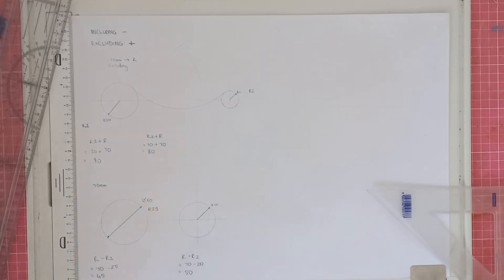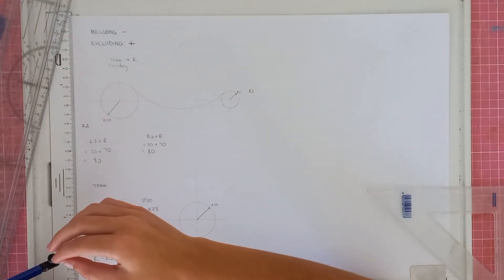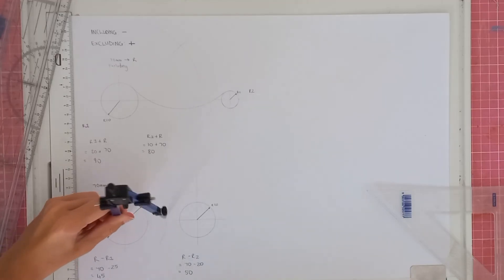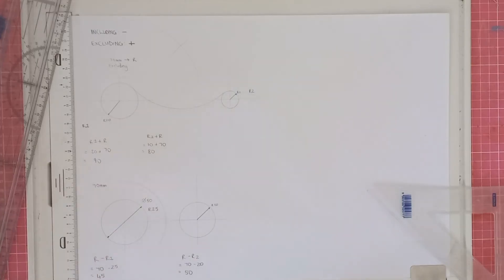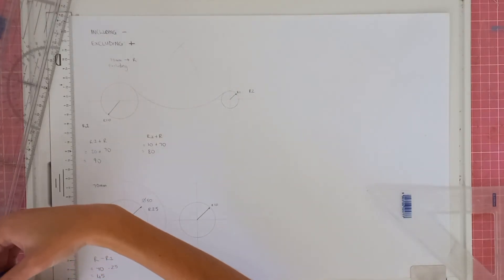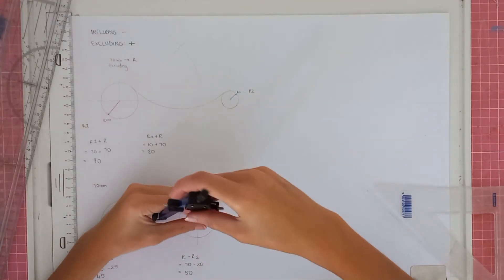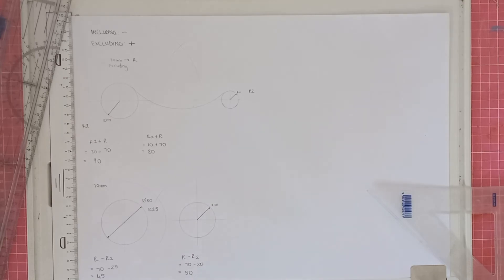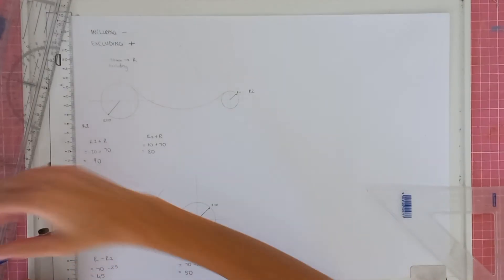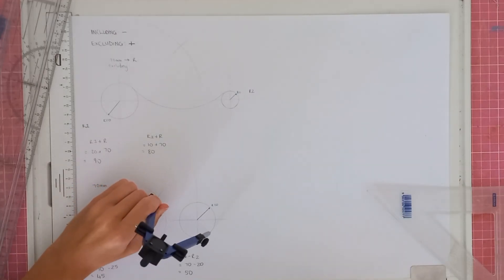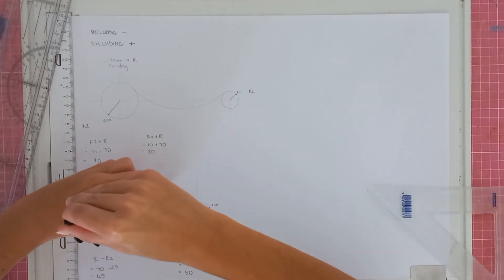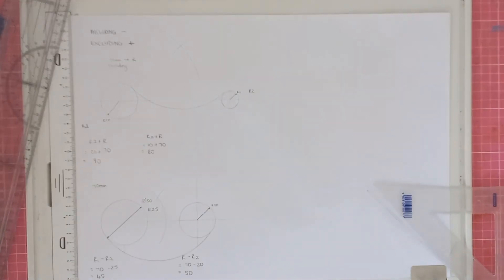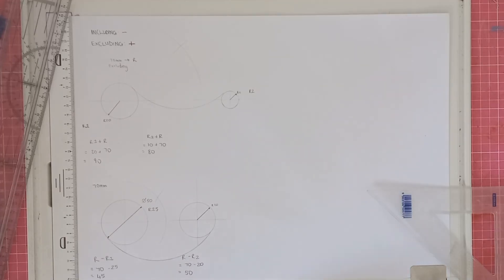Once you've got those two measurements, put 45 on your compass and draw an arc. Then measure 50 for the second circle and mark where they both intersect. After that, take your radius of 70, place it on those points, and construct your including arc — it will look like this.